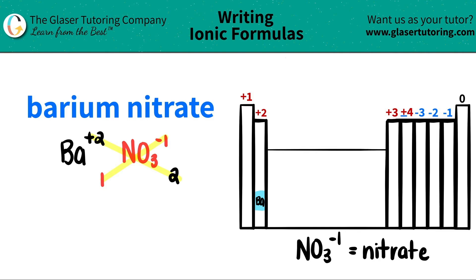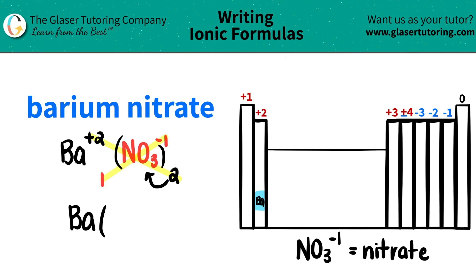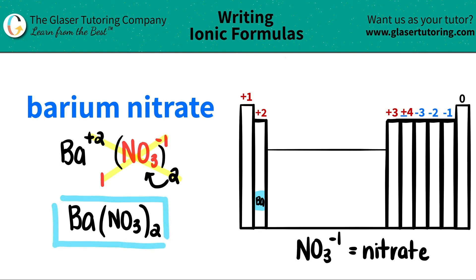So now I'm ready to write my formula. I have barium, Ba. I only have one of them, so you don't really have to write the 1. But now I have multiple nitrates. When you have multiple polyatomics, you have to put them in parentheses. So in this case, I will put parentheses, write the polyatomic — NO₃ — close the parentheses, and now say how many you have: 2 of them. So barium nitrate is Ba(NO₃)₂.